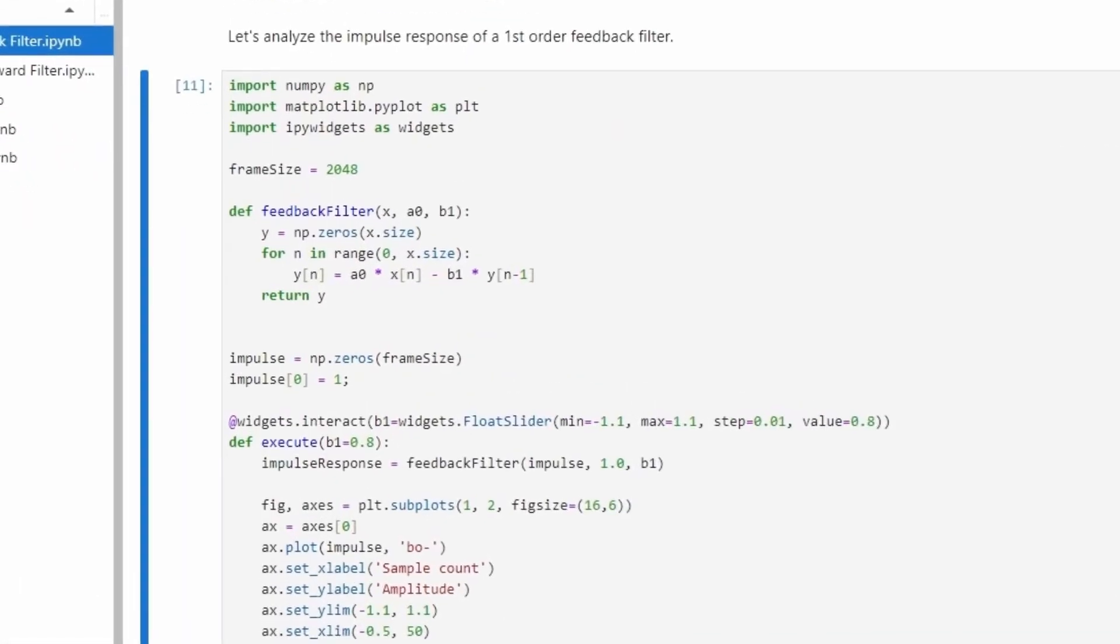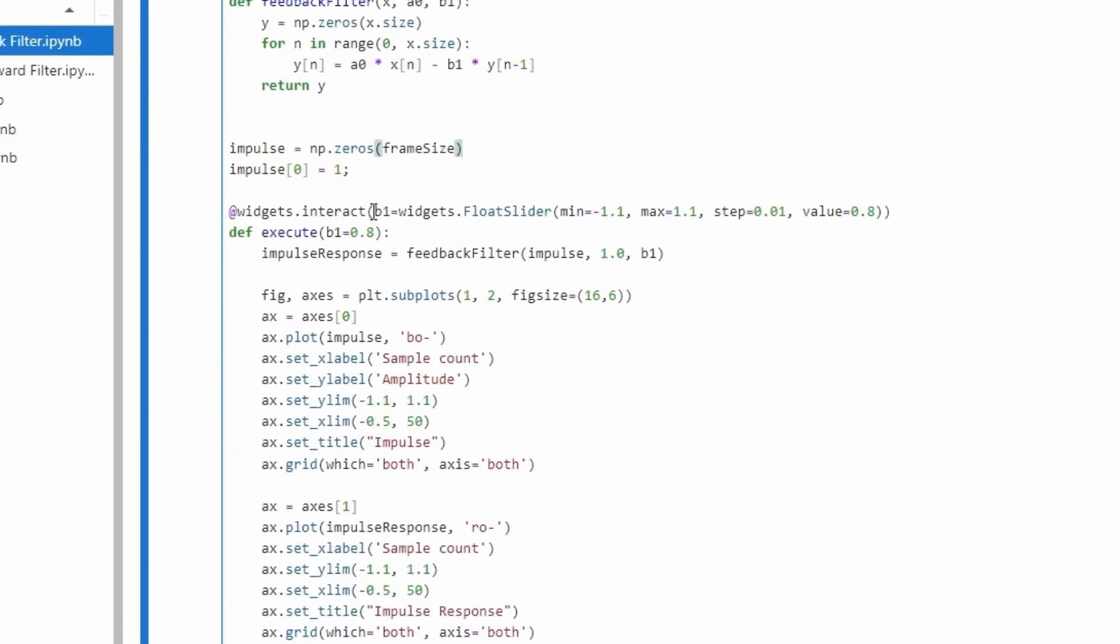In the code, I'm generating an impulse signal with a stream of zeros, with the first sample as one. I've defined a feedback filter function which takes the input samples, a0 and b1 coefficients as the arguments, calculates the filtered values, and returns it. I've set up the b1 coefficient to be an interactive slider that you can vary.